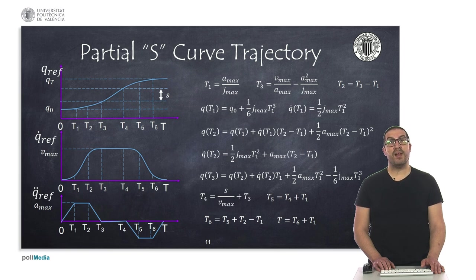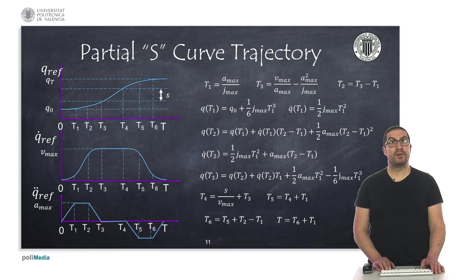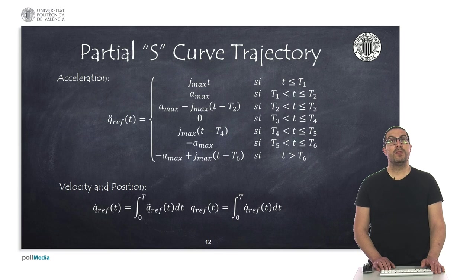There is a minimum value, which is the one computed before for the S-shaped curve, and the maximum value, which is indeed infinity. Therefore, this curve is in between both previous solutions, depending on the selected jerk. The curve profile has, in this case, seven switching time instances as shown. Once we compute those time instances, the curve can be obtained as a piecewise expression, as you can see.